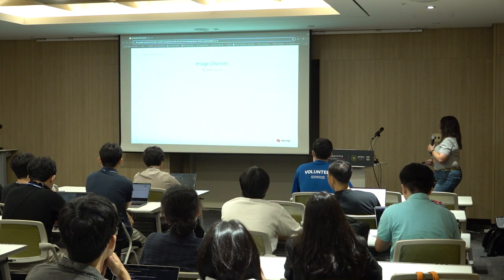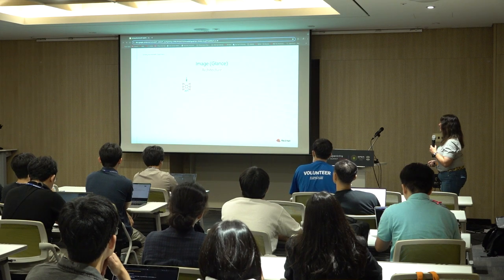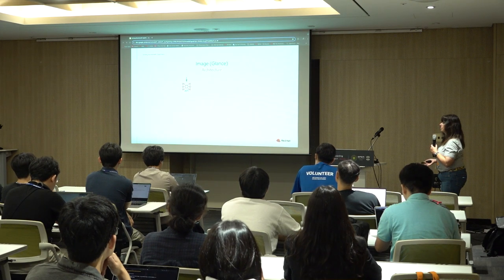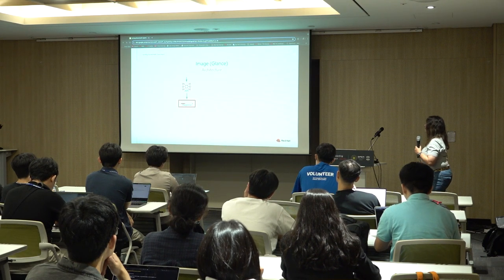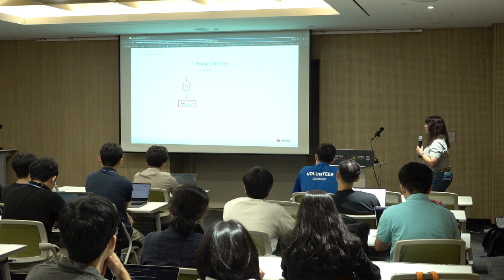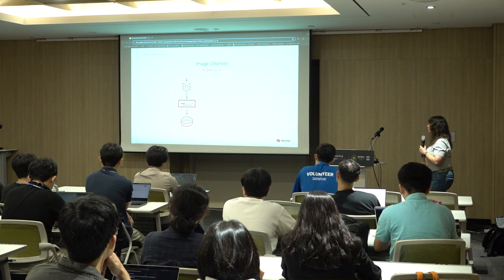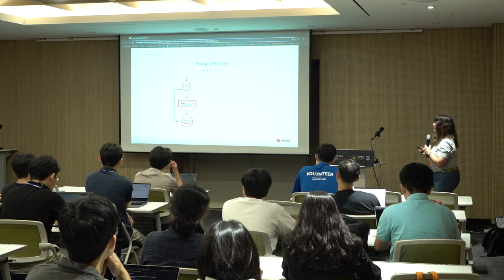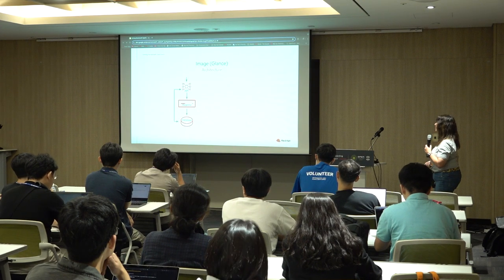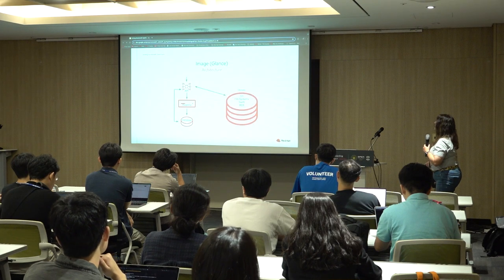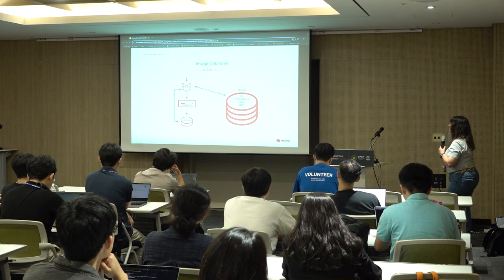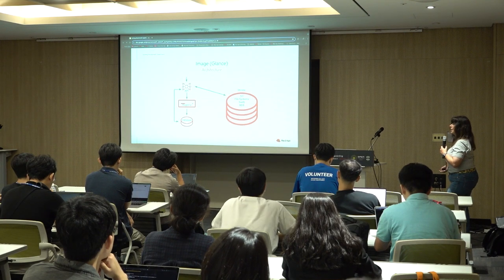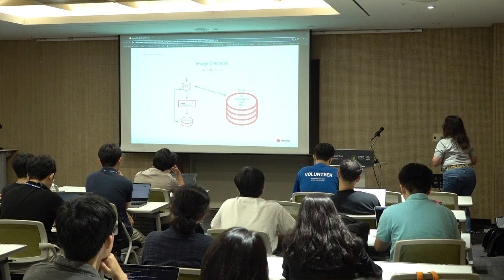Let's look at Glance. The API comes in from the user, whether through the command line, directly to the API, or through the UI. It sends that information to the Glance registry, which talks to the Glance database. The database goes back to the API, which verifies you're allowed to talk to it. Then we have the different Glance stores — it could be Swift, but you can also use S3, the actual filesystem, or an RBD.